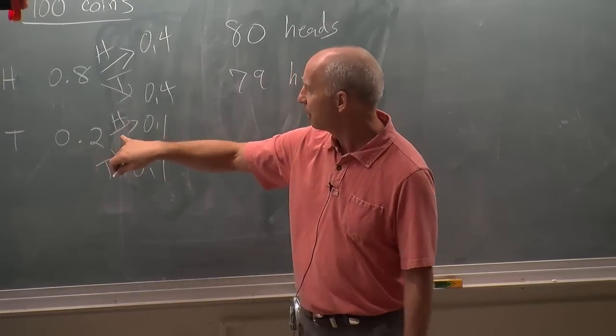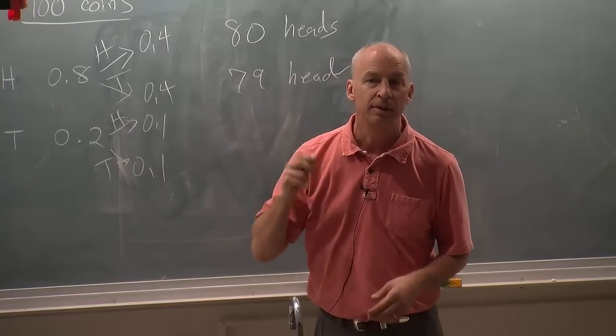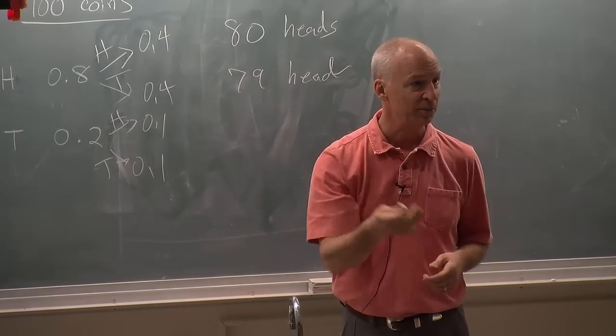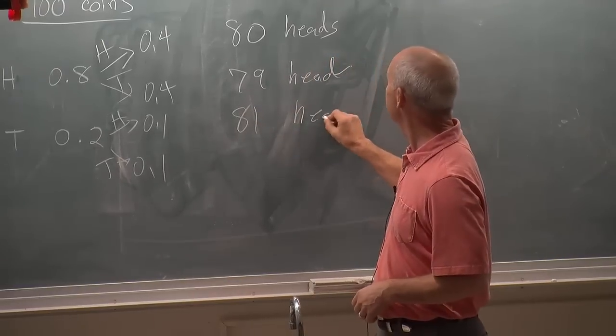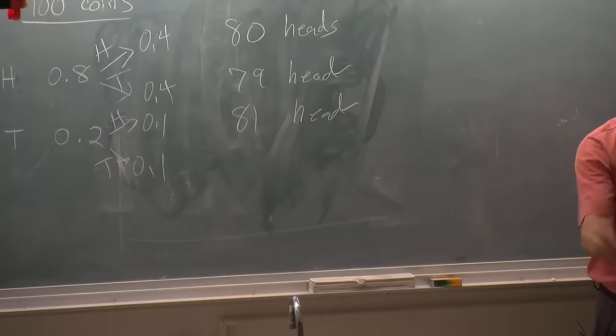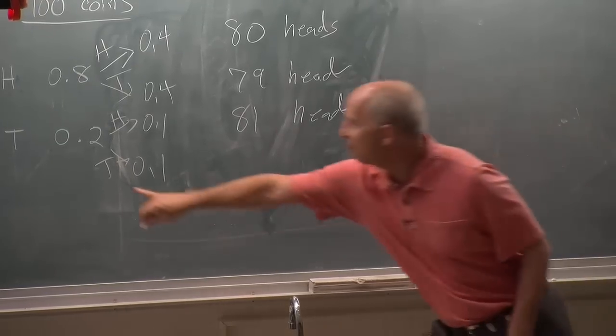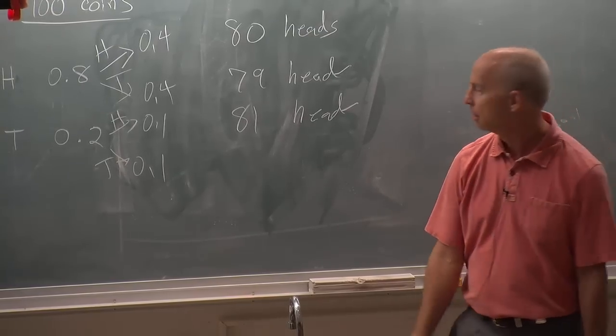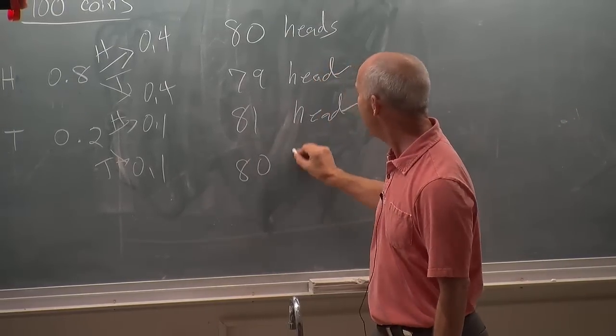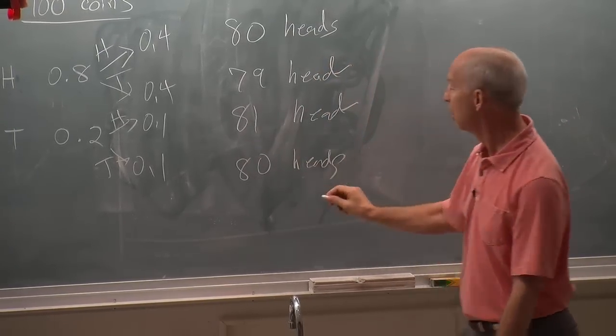If I grabbed a tails and flipped it and got heads, so I've changed the number of heads, I've increased it by one, then 81 heads is what I have left. Because I've taken tails and gotten heads out of it. And if I take tails and I leave it, I flip it and it's still tails, then I haven't changed the number of heads or the number of tails.